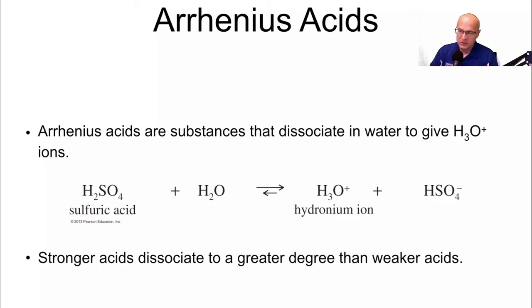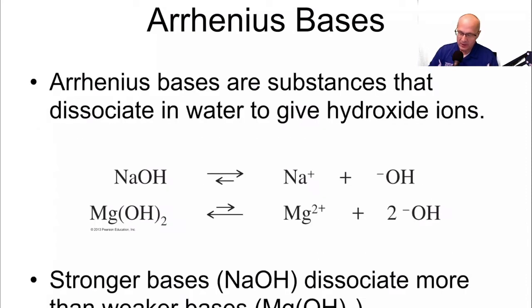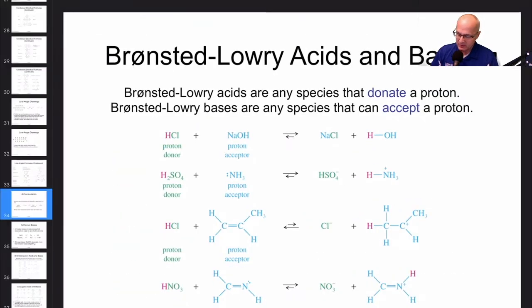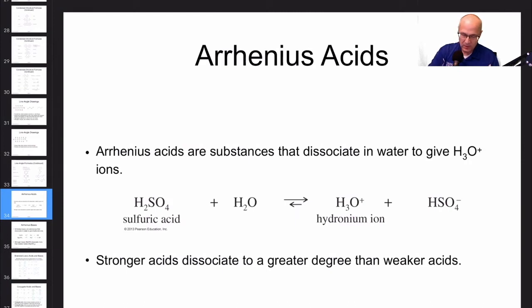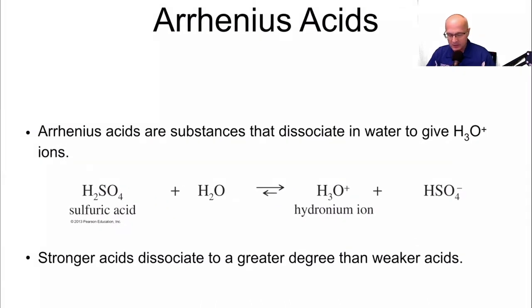An Arrhenius acid generates hydronium in water. This is hydronium right here, H3O plus, that is what gives you the proton in water. So this is the acid, this is the base, this is the conjugate acid, and this is the conjugate base.